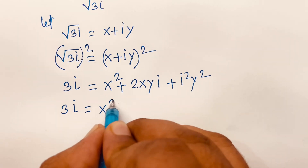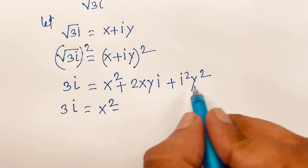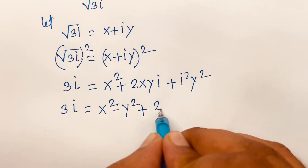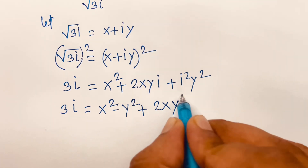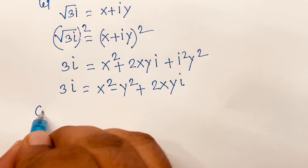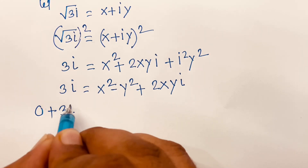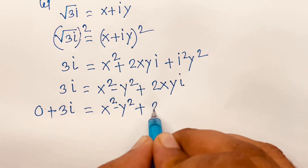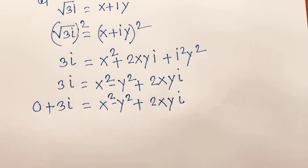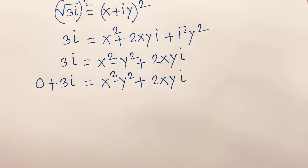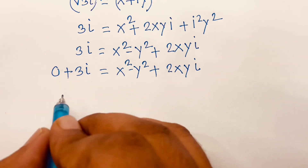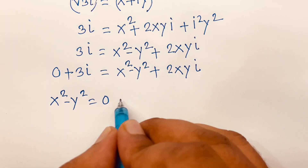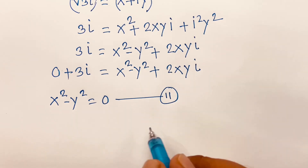Then I can say here is 3i is equal to x squared, and since i squared equals minus 1, it becomes minus y squared plus 2xy·i. So 0 plus 3i is equal to x squared minus y squared plus 2xy·i.